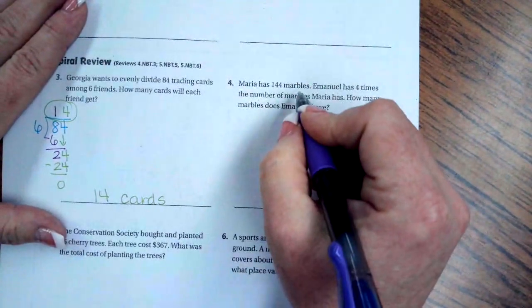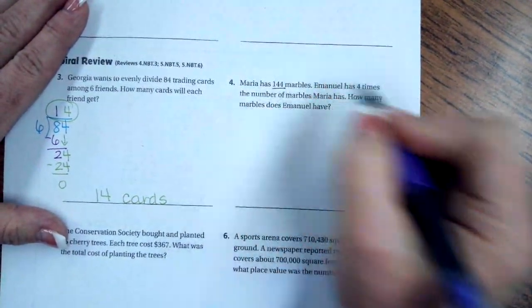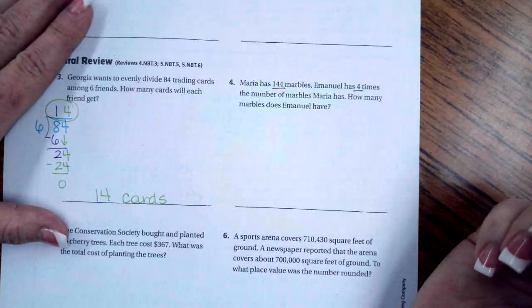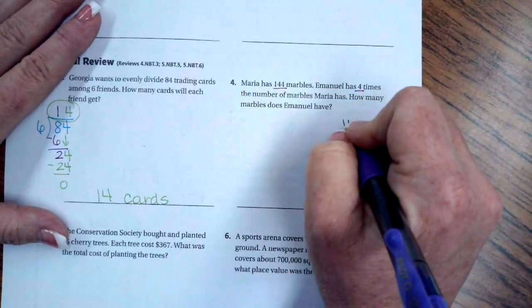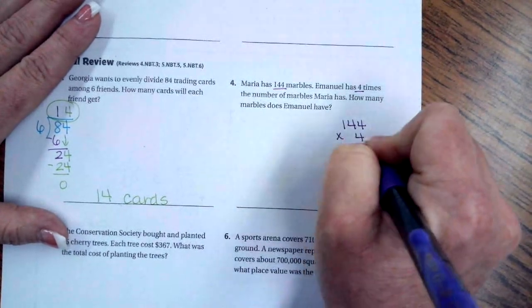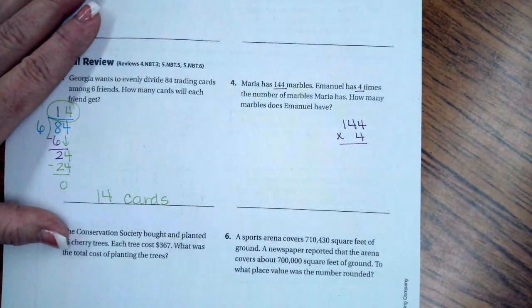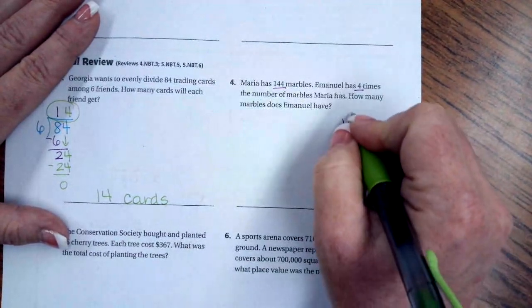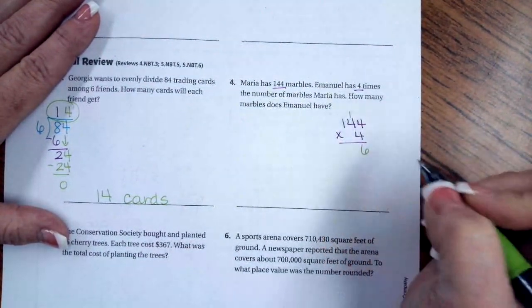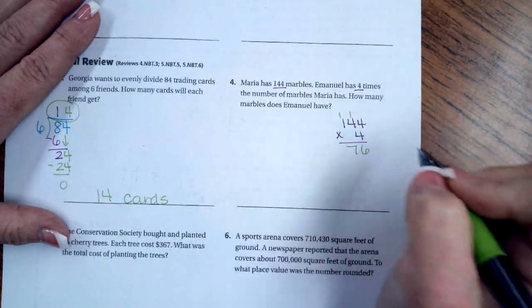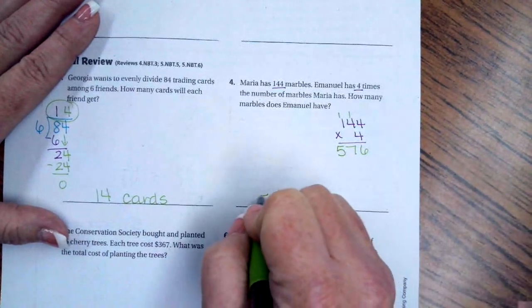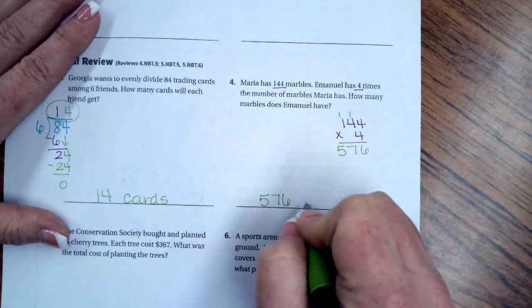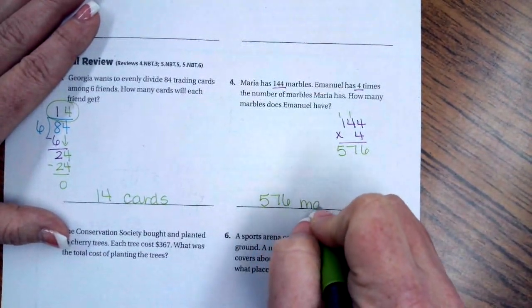We're going to go over here. Maria has 144 marbles. Emmanuel has four times the number of marbles Maria has. How many marbles does Emmanuel have? Well, we have to do 144 multiplied by four. So four times four is 16. I'm going to carry my one. Four times four again is 16, but plus one is 17. Carry my one. Four times one is four, plus one is five. So 576 marbles.